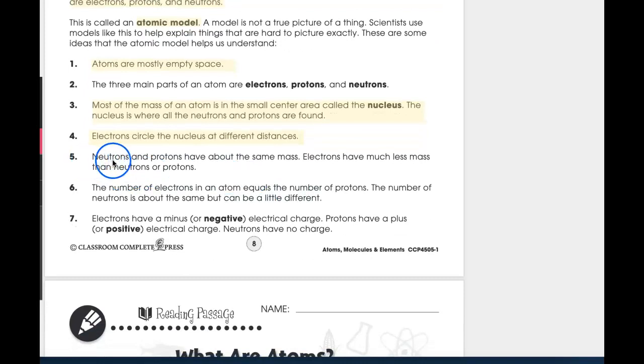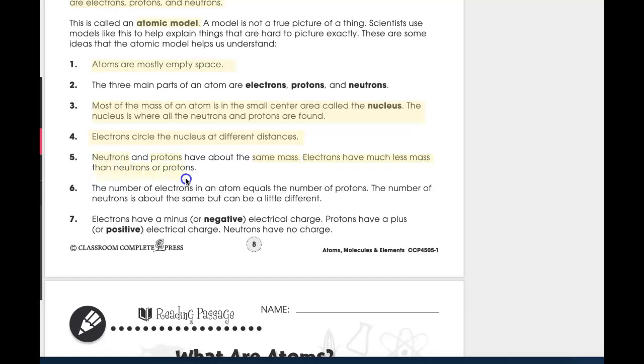This is important. There is a question about this. The heaviest part of the atom is in the nucleus. That is what this is saying. It says most of the mass, most of the weight is in the center. Electrons circle the nucleus at different distances. This is also in your questions. Number five, neutrons and protons have about the same mass. Electrons have much less mass than neutrons and protons. So what this is saying is that neutrons and protons, go ahead and highlight with me, weigh about the same. But the electrons, which are on the outside, have less mass than both the neutrons and protons put together. And guys, once again, it goes back to the fact that the heaviest part, number three, the heaviest part of the atom is the nucleus.